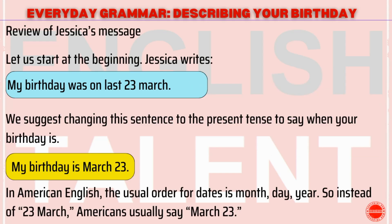Let us start at the beginning. Jessica writes: My birthday was on last the 23rd of March. We suggest changing this sentence to the present tense to say when your birthday is: My birthday is March 23rd. In American English, the usual order for dates is month, day, year. So instead of the 23rd of March, Americans usually say March 23rd.